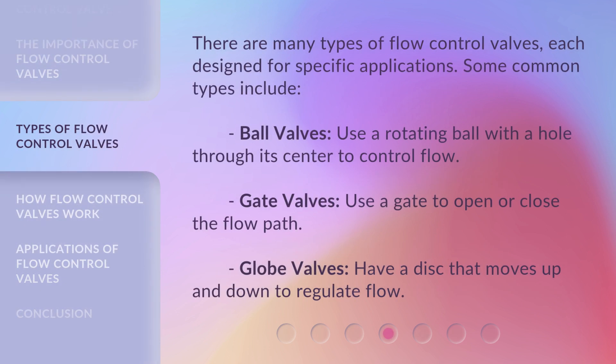There are many types of flow control valves, each designed for specific applications. Some common types include: ball valves, which use a rotating ball with a hole through its center to control flow; gate valves, which use a gate to open or close the flow path; and globe valves, which have a disc that moves up and down to regulate flow.